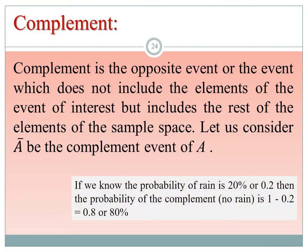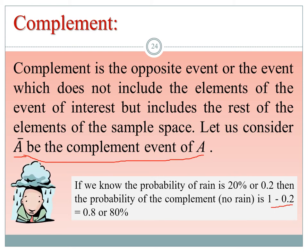The complementary event is the opposite event: it does not include the elements of the event of interest but includes the rest of the sample space. The complement of A is denoted A-bar or A with superscript C. For example, if the probability of rain is 0.2, then the probability of no rain (the complement) is 1 minus 0.2, which equals 0.8. In general, the probability of A-complement equals 1 minus the probability of A.